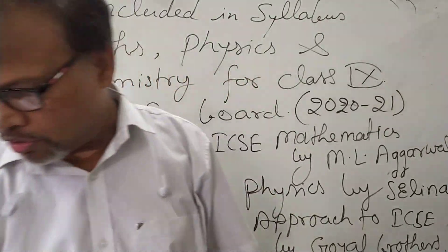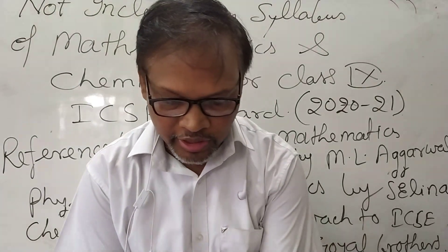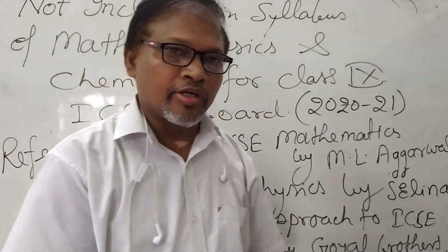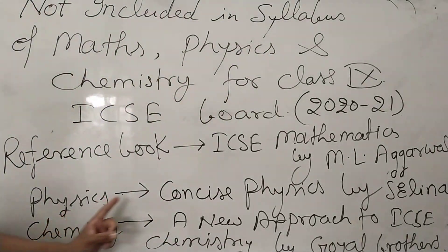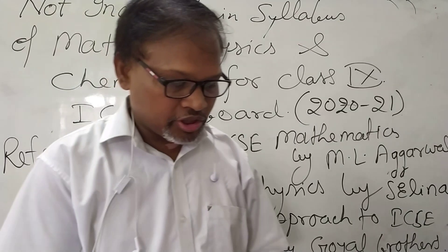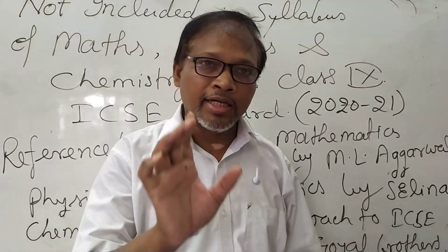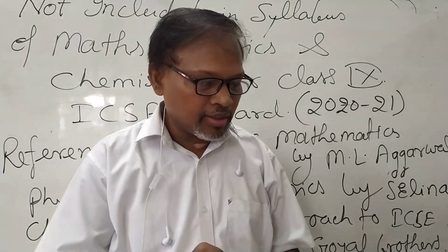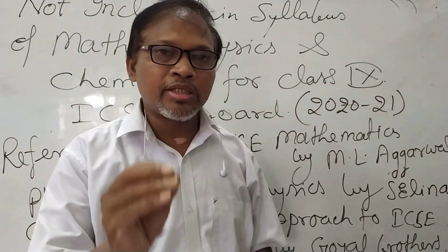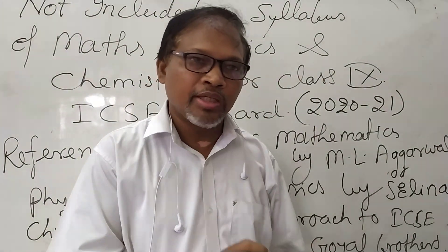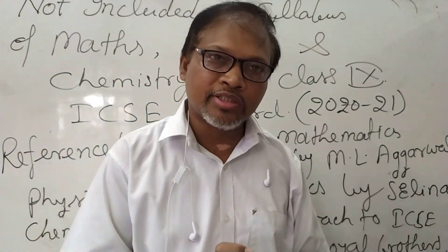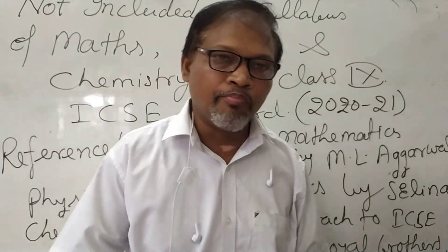Now I talk about Physics. In physics, I will clearly tell you which chapter, exercise, or topic will not come. I have taken the reference book Concise Physics by Selina Publication. In chapter 1, the topics excluded are: Vernier Calipers, Screw Gauges, and the Second Pendulum. Exercise 1B in Concise Physics by Selina Publication — related to Vernier Calipers and Screw Gauges — has been removed.